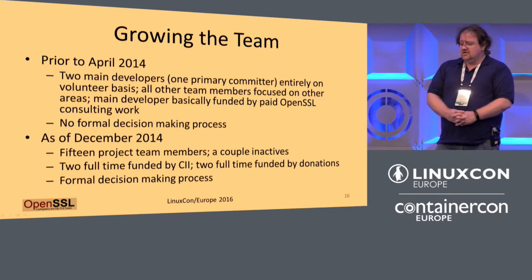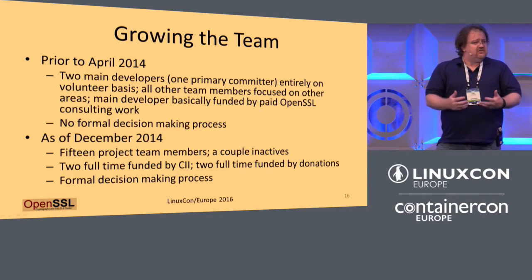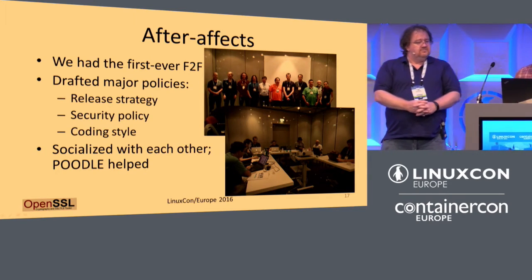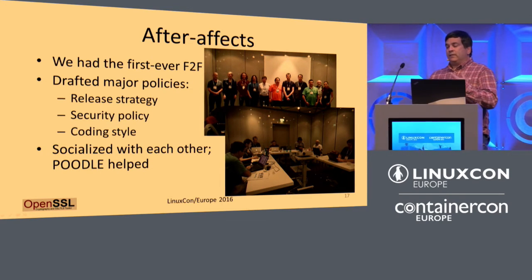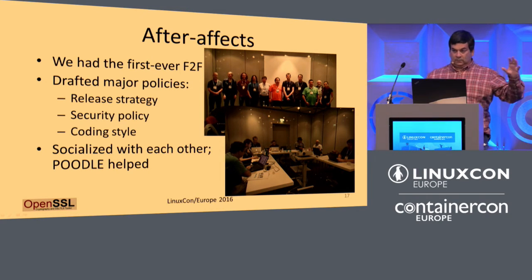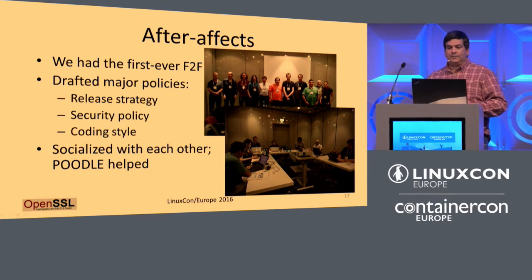With a bigger team, you need more processes in place. We have a very formal decision-making process for the team. You get 15 people together, you don't get 15 people agreeing on everything — you have to have a mechanism for making a decision. One interesting thing about the CII: one of the initial founders and sponsors was Microsoft, because they recognized that if the internet goes down because people can't rely on it, they're going to go down too. It's not just the usual IBM, Red Hat, Oracle open source vendors. The next round of sponsors will probably include banks and other organizations.